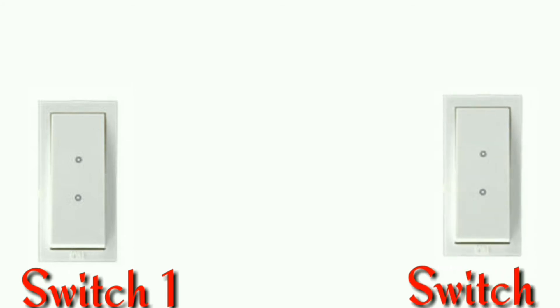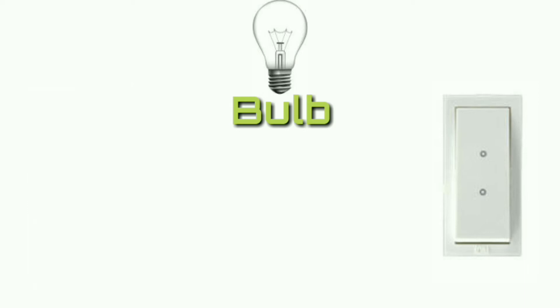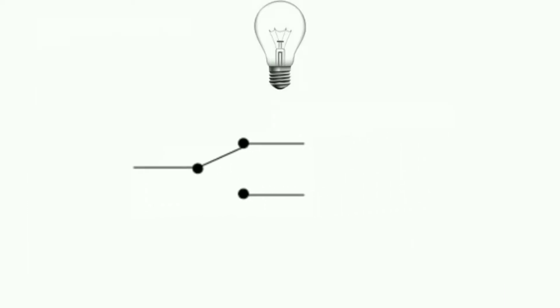To do wiring first of all we will take two two-way switches and one bulb. By the switches we will operate the bulb. Friends, the two-way switch symbol is this. To understand better we will use this symbol.